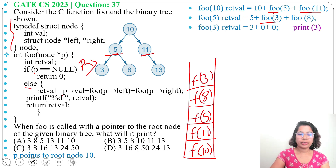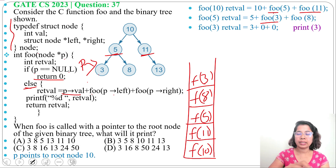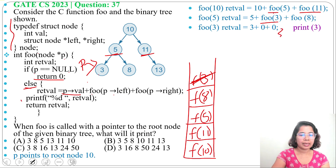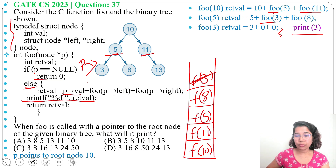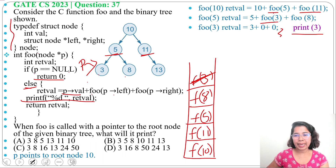In foo(3), 3 is not null, so we execute the else part. Return value will be p->value which is 3. Node 3 has no left child, so foo(null) returns 0. Similarly, no right child, so that also returns 0. So foo(3) returns 3 and prints 3.